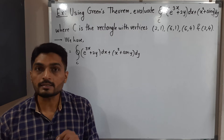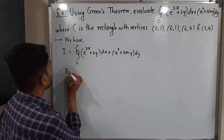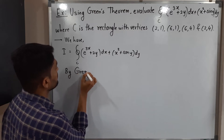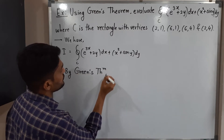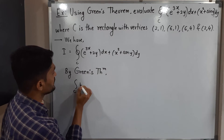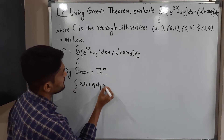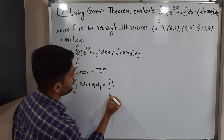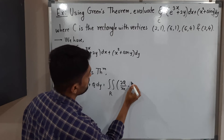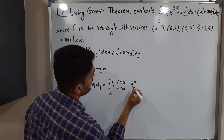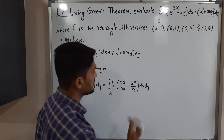So let us write the statement of Green's theorem first. By Green's theorem, the statement is: integration over C of P dx + Q dy equals double integration over R of (∂Q/∂x − ∂P/∂y) dx dy. This is our Green's theorem.